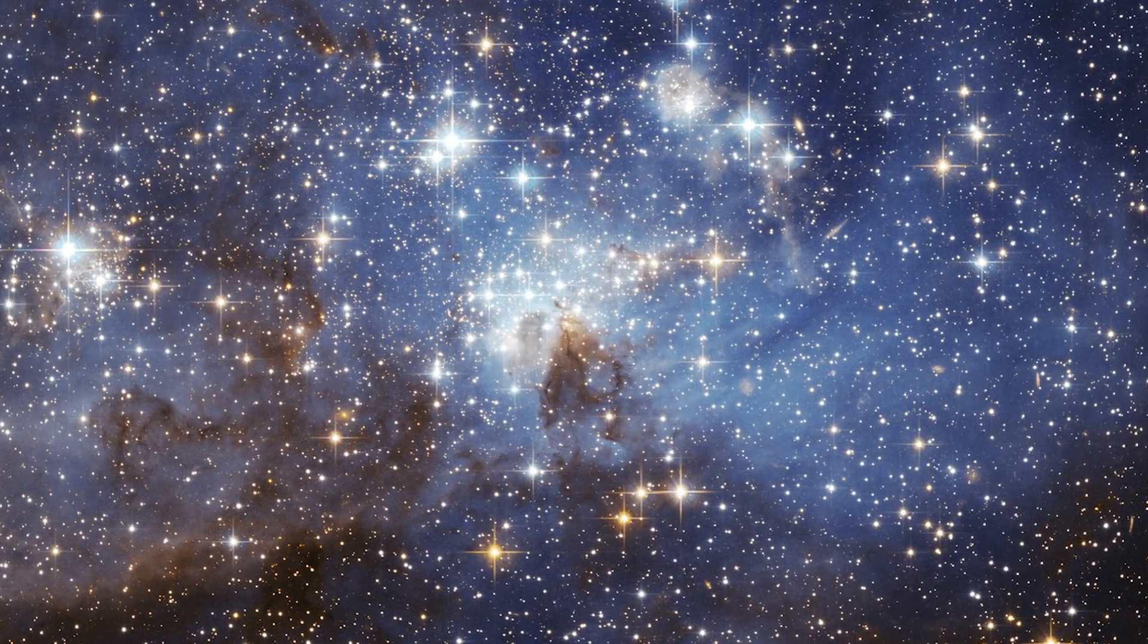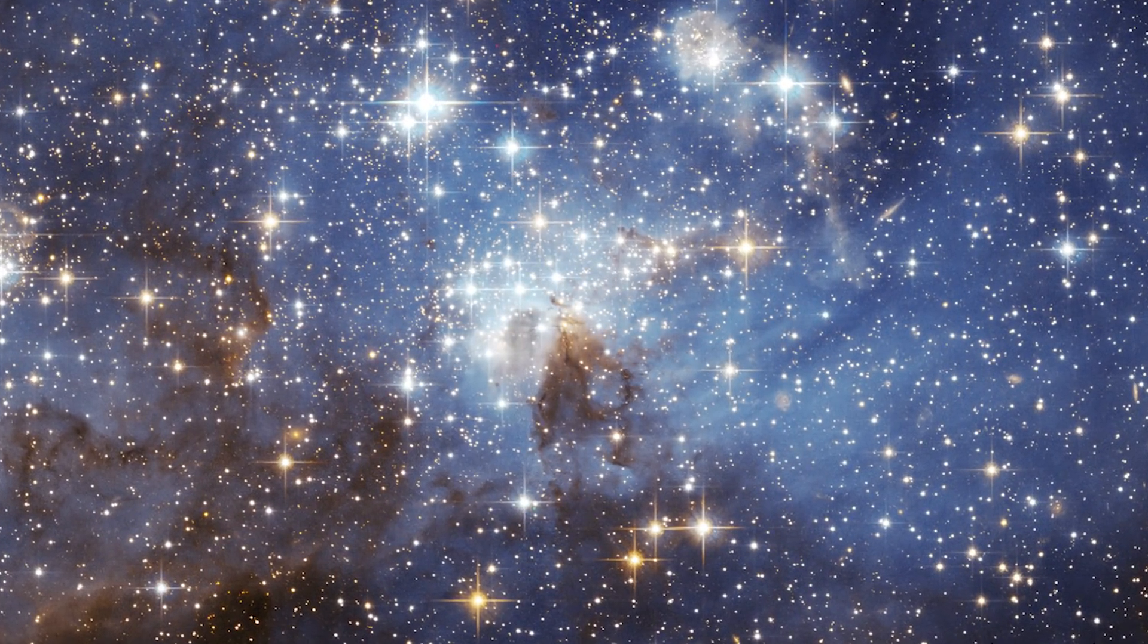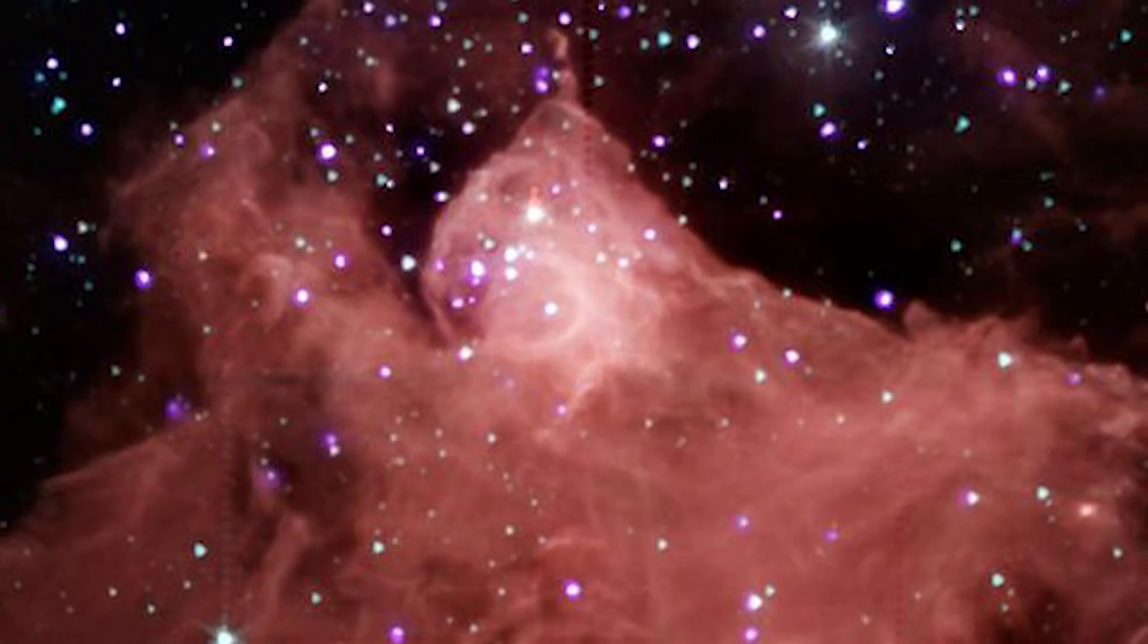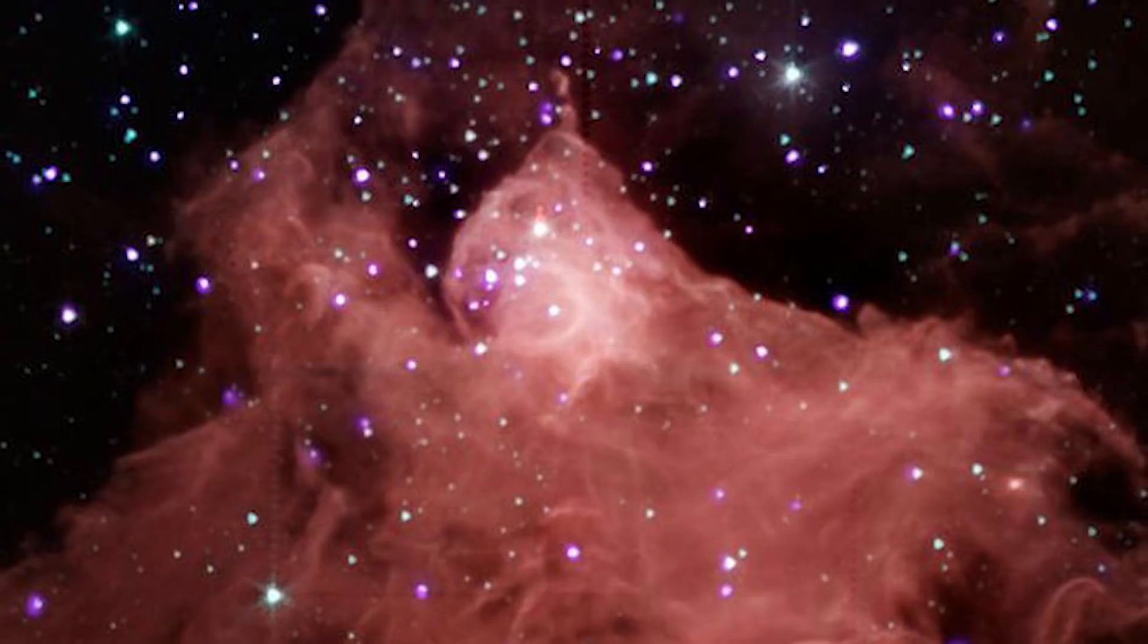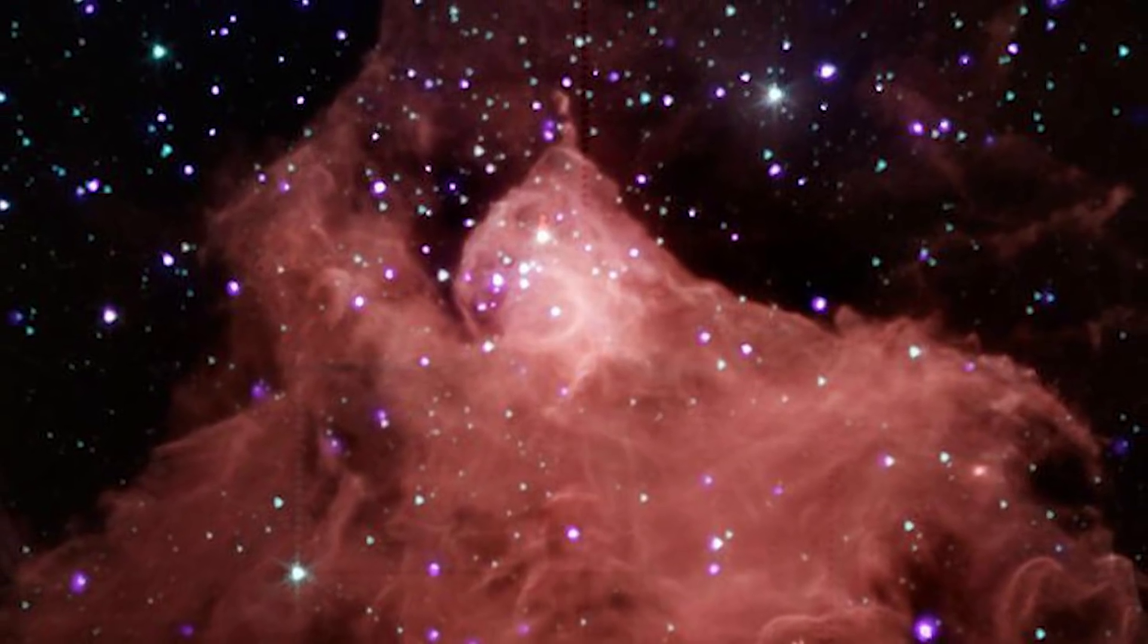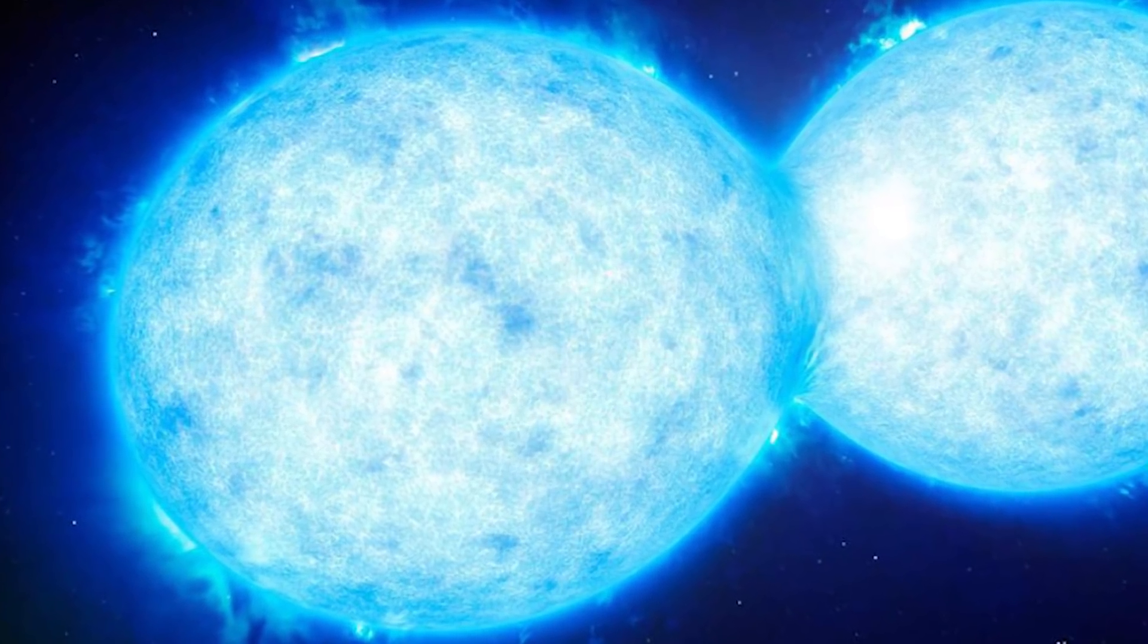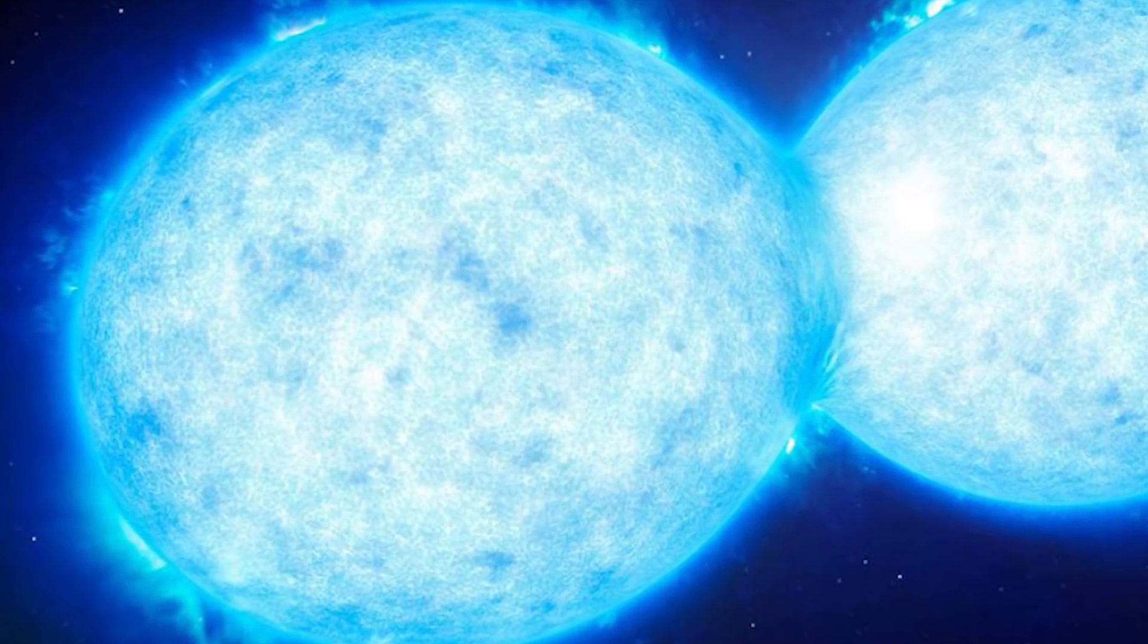Stars are gigantic burning balls of luminous plasma that are held together by their own gravity. A star forms in a nebula from collapsing clouds of interstellar gas and dust. The nebula can go on to form stars the size of our sun, huge stars one to three times the mass of our sun, red giants and red supergiants.